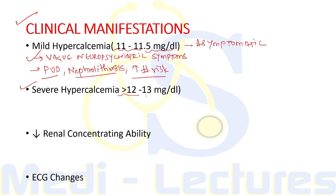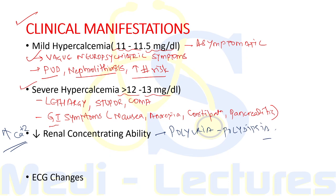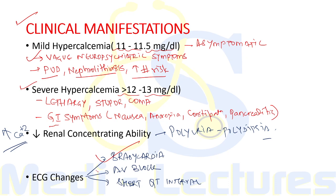When hypercalcemia becomes severe — more than 12 to 13 mg/dL — patients usually complain of lethargy, stupor, and eventually coma. Gastrointestinal symptoms range from nausea and anorexia to constipation and even pancreatitis. Hypercalcemia leads to decreased renal concentrating ability, causing polyuria and polydipsia; many patients are dehydrated. Long-standing hyperparathyroidism can present with bone pain and pathological fractures. ECG changes include bradycardia, atrioventricular block, and short QT interval, while hypocalcemia leads to prolonged QT interval.